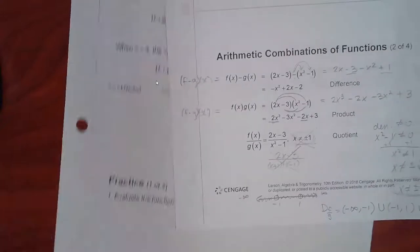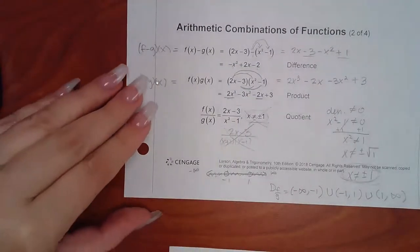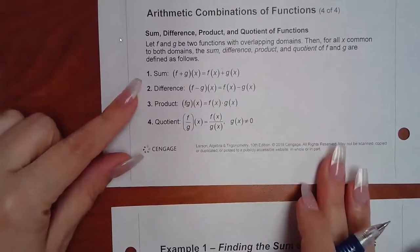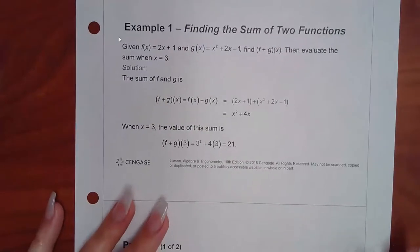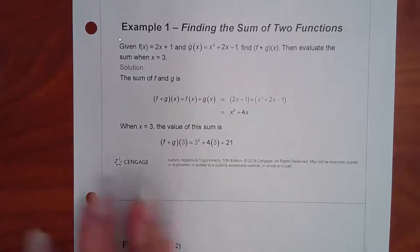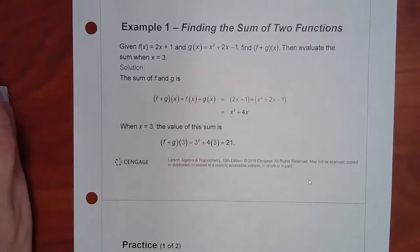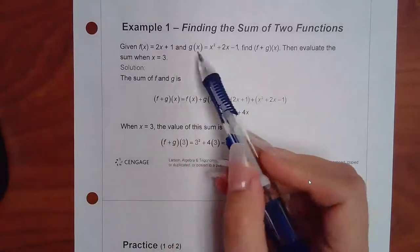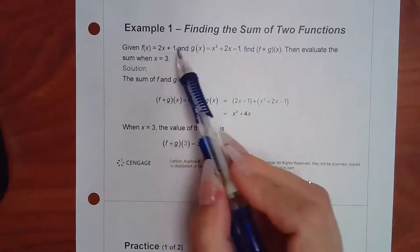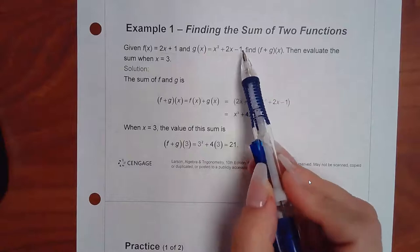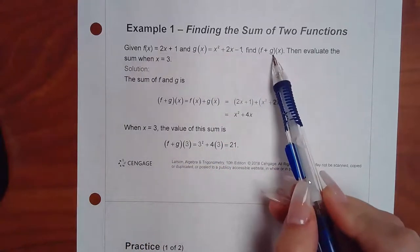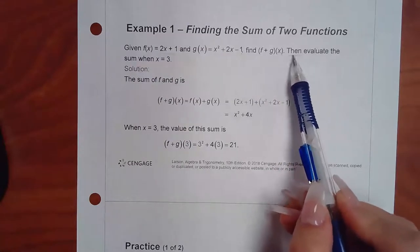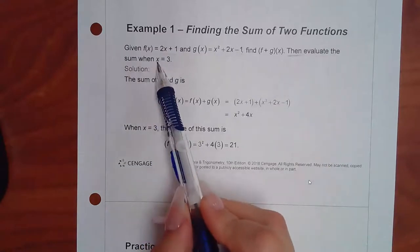Now for example one, they're giving us two different functions — a linear and a quadratic with three terms this time. Given that f is this and g is this, find f + g of x, and then evaluate the sum when x equals 3.